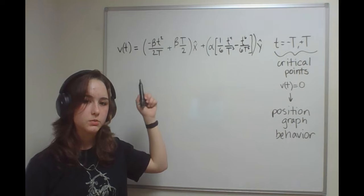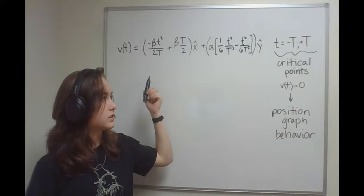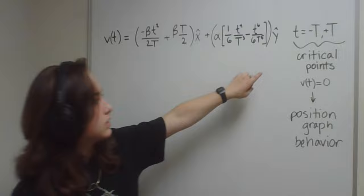This is the velocity function of your data in terms of t. Some critical points of this function are given.